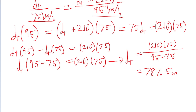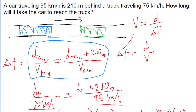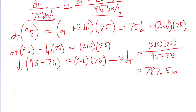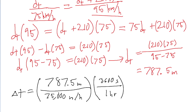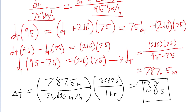So 787.5 meters is how far the truck travels during the time it takes for the car to catch up. Now we use delta t equals distance over speed for the truck: 787.5 meters divided by 75 kilometers per hour. We convert 75 kilometers per hour to meters per second — 75,000 meters per hour divided by 3,600 seconds per hour. Putting this all into a calculator gives a time of about 38 seconds. So 38 seconds is the answer to this problem.